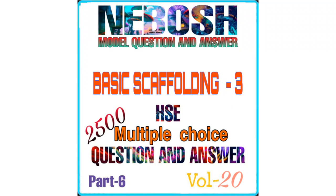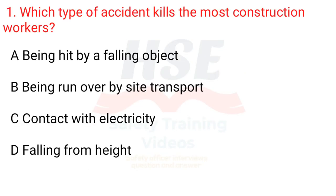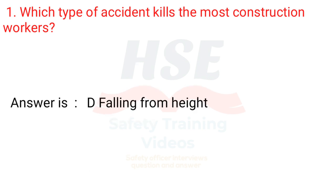Basic scaffolding. Question 1: Which type of accident kills the most construction workers? A. Being hit by a falling object. B. Being run over by site transport. C. Contact with electricity. D. Falling from height. Answer is D. Falling from height.